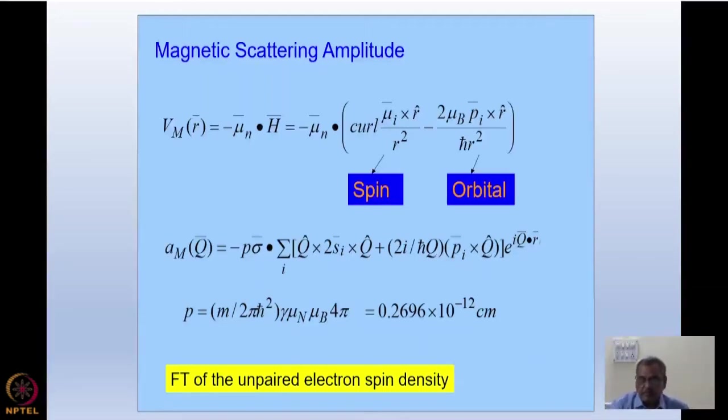This value you can see that 10^-12 centimeter. So if I do 4π A square then it comes to about 10^-24 which is one barn square of this value. And this is in our experiment—earlier I told you that I was looking at the Fourier transform of the nuclear density. Now I am looking at the Fourier transform of the unpaired electron spin density together with the Fourier transform of the nuclear density. So I get both of them when I do neutron diffraction for a magnetic sample.